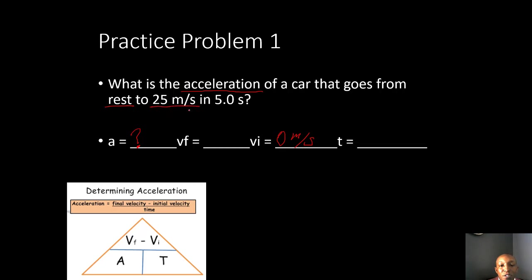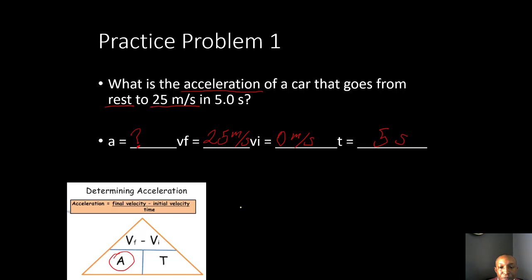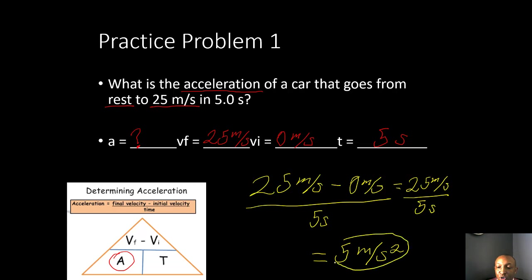If the car is at rest, that means it's not moving — that's your initial velocity of zero meters per second. It goes to 25 meters per second, which is your final velocity, and it does that in five seconds — that's your time. Solving for acceleration: final velocity minus initial velocity over time gives us 25 minus zero over five seconds. 25 divided by five equals 5 meters per second squared.